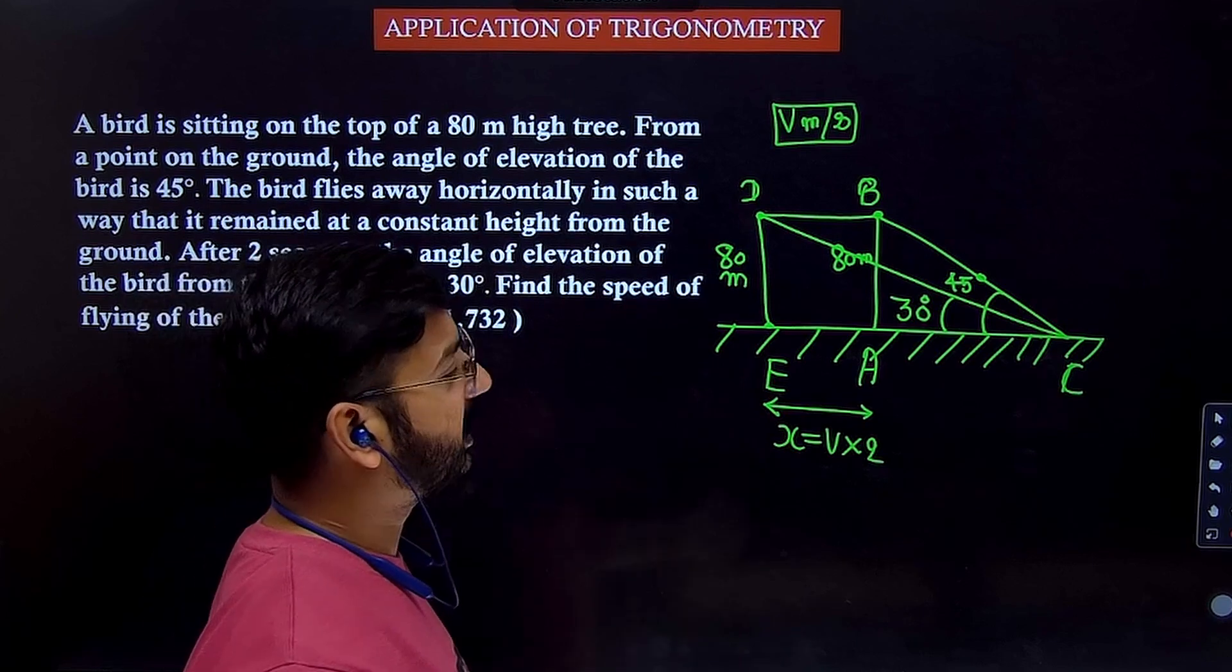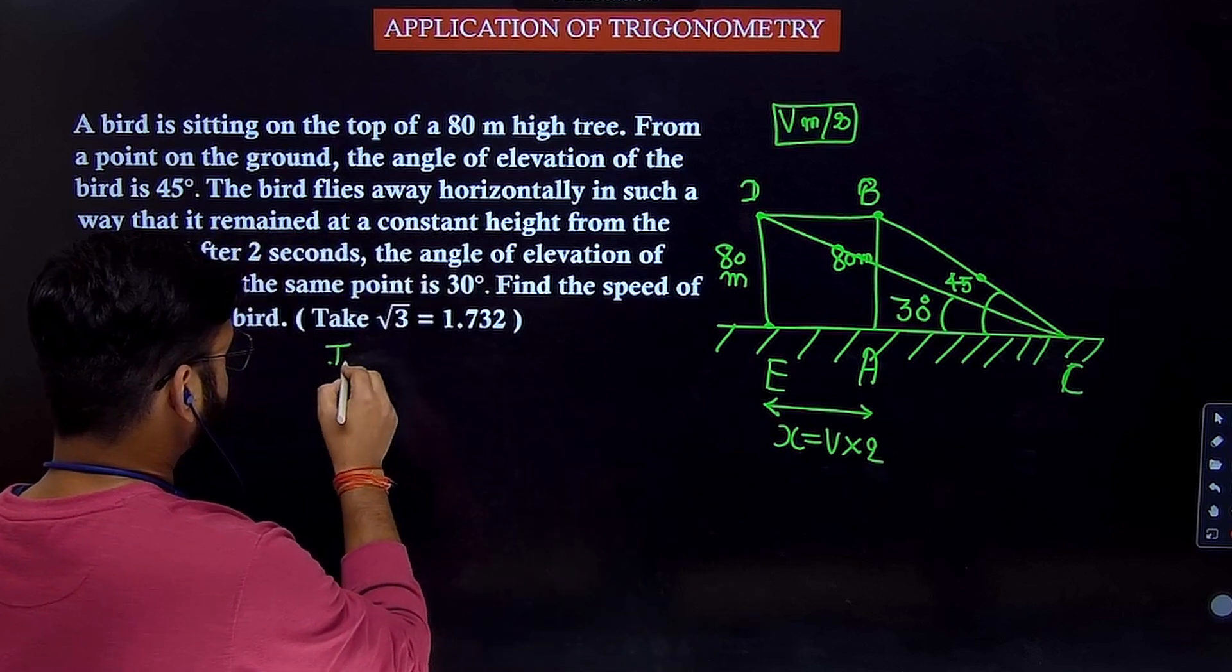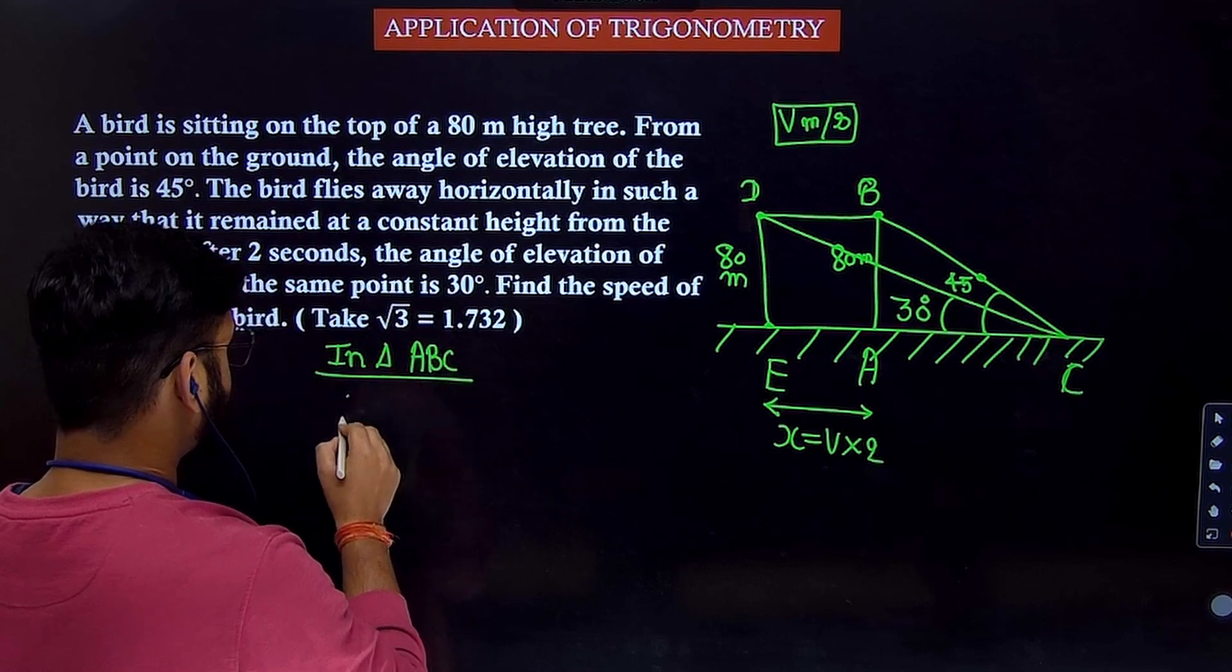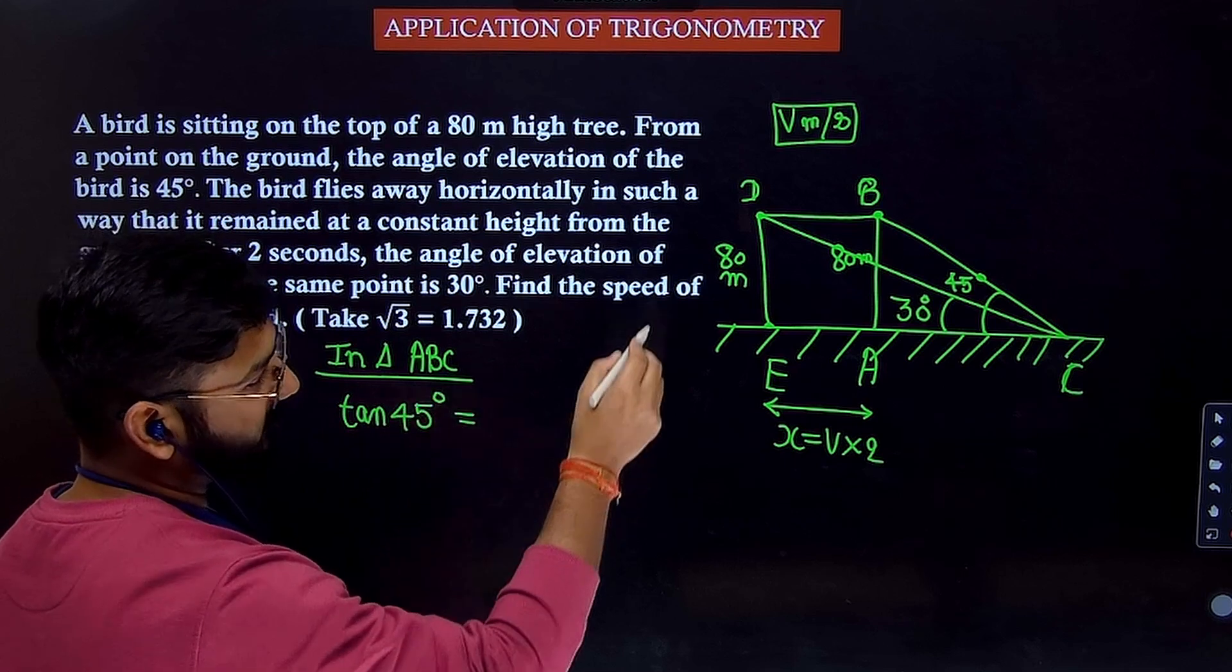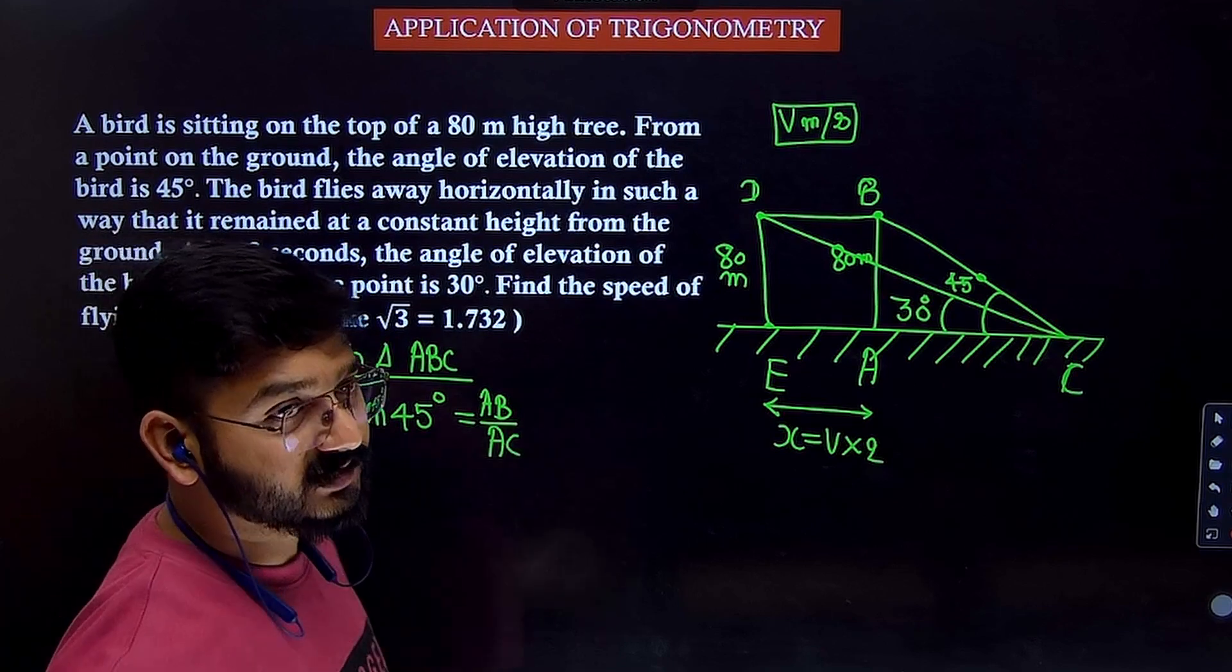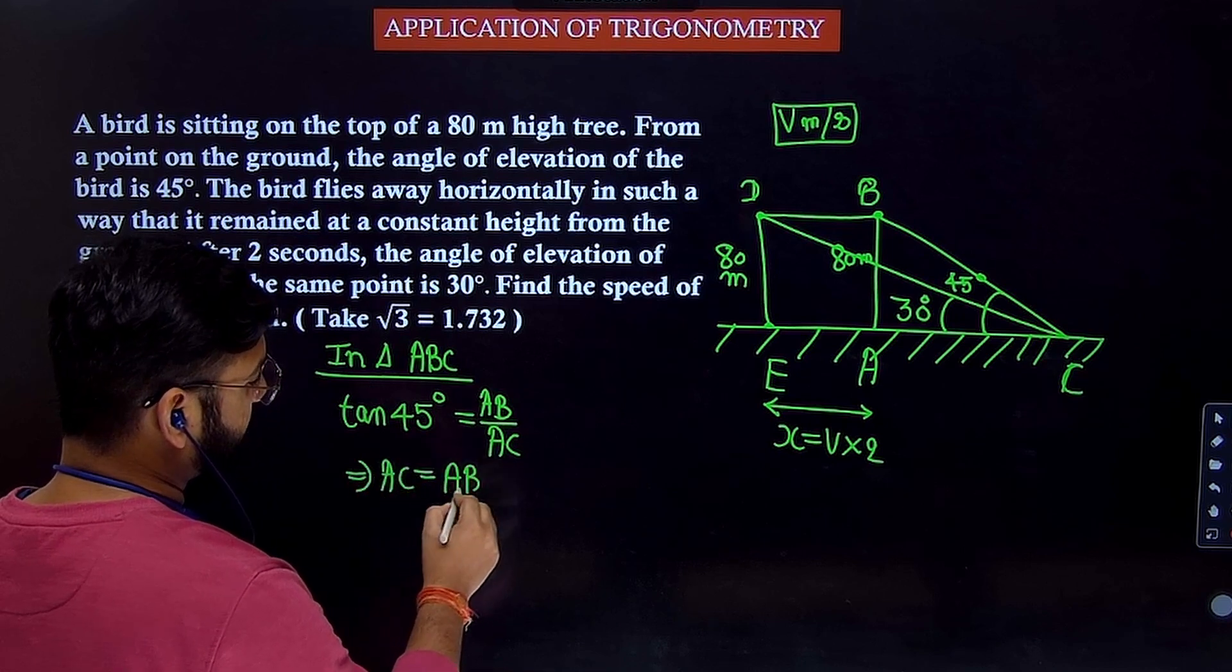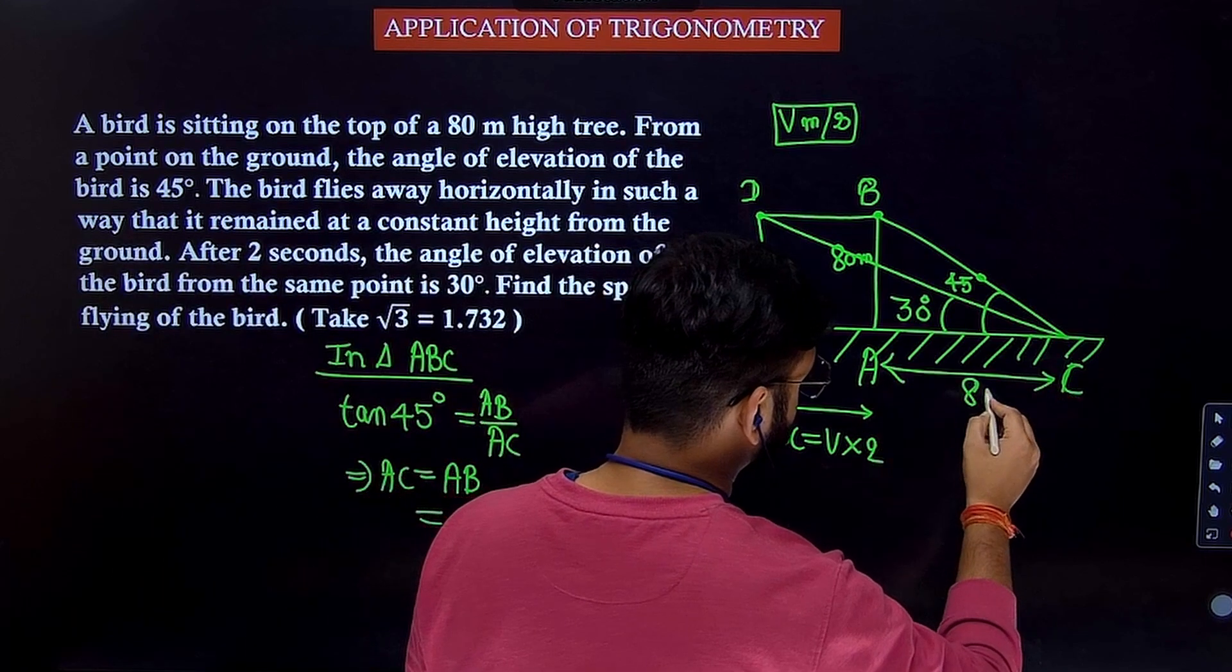So as you can see that we have two right angle triangles. Apply tan theta in both the triangles. So in triangle ABC, what can you write? Tan 45. When you apply tan 45, it will be AB divided by AC. Tan 45 is how much? 1. So it means AC and AB will be equal which will be how much? 80 meters. So this distance will be 80 meters.